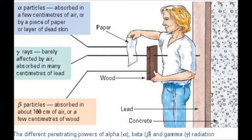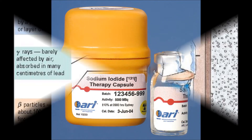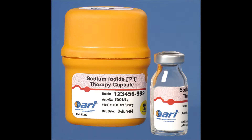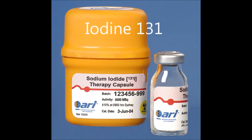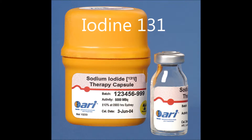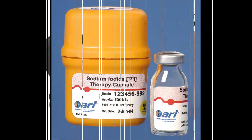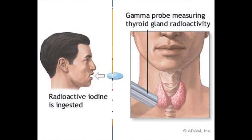Rutherford's method of distinguishing between the different particles was based on how easily they would be absorbed. A perfect example of a radioisotope is iodine-131, which has a half-life of approximately 8 days and emits beta and gamma radiation.